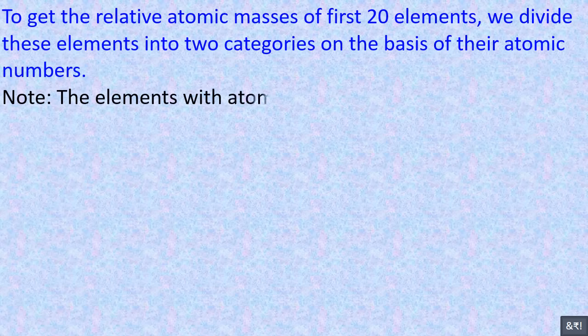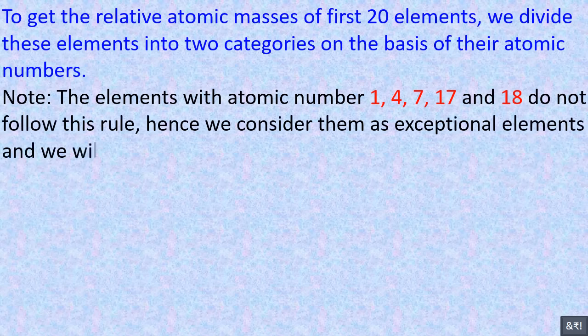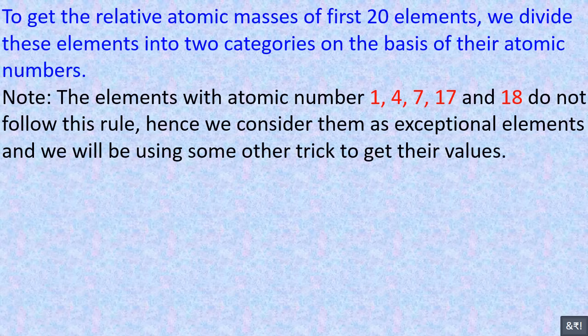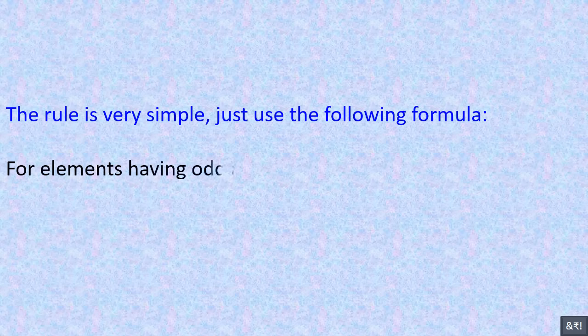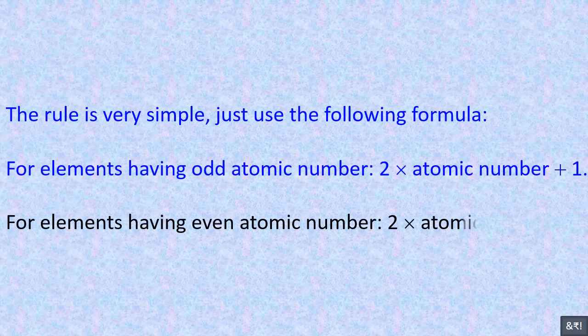The elements with atomic number 1, 4, 7, 17 and 18 do not follow this rule; hence we consider them as exceptional elements and we will be using some other trick to get their values. The rule is very simple — just use the following formula: for elements having odd atomic number, 2 multiplied by atomic number plus 1; for elements having even atomic number, 2 multiplied by atomic number.